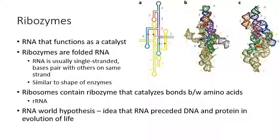For an enzyme, the folded shape is stabilized by interactions between the backbone or side chains of amino acids. For a ribozyme, the shape is stabilized by base pairing of the strand with itself — it's basically a single strand that loops back on itself and base pairs with itself. If you have an A on one part of the strand, that could base pair with a T on another part of the strand where it has looped around.